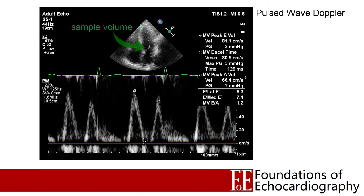Once the ultrasound machine has deduced the velocity of the moving blood and the direction that blood is travelling — either towards or away from the probe, based on whether the frequency has shifted to a higher or lower frequency — it needs to display that information in a way we can understand. For a single point in space it can create a graph where time is displayed across the x-axis and blood velocity along the y-axis, which by convention displays blood moving towards the probe as above the baseline and blood moving away as below the baseline. This is referred to as spectral Doppler.